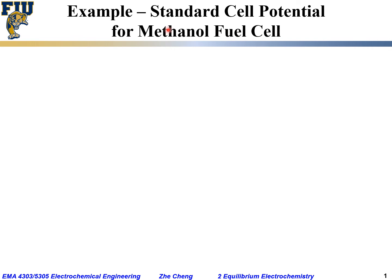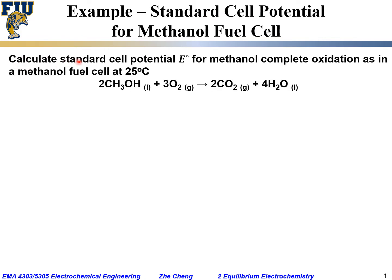We're looking at the relationship between cell potential and the Gibbs free energy change. Now let's look at our example of a methanol fuel cell. We want to calculate the standard cell potential, or E°, for the complete oxidation of methanol — methanol combined with oxygen gas to form CO2 and water — as in a methanol fuel cell at 25 degrees Celsius, using the relationship between electrode potential and Gibbs free energy change.